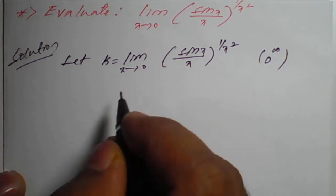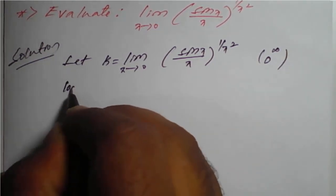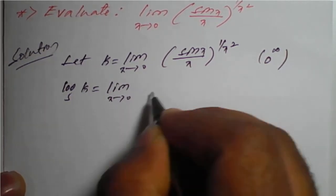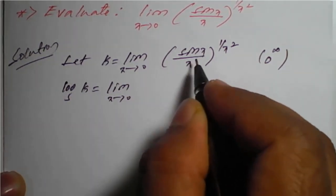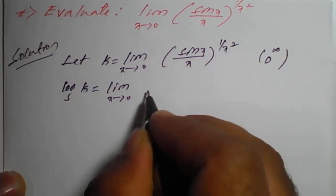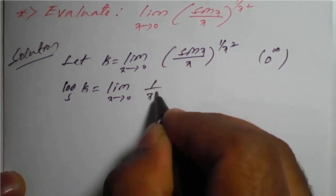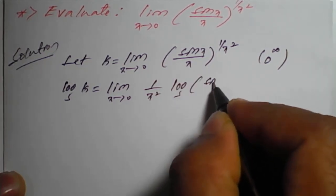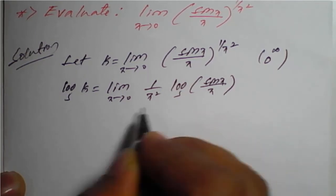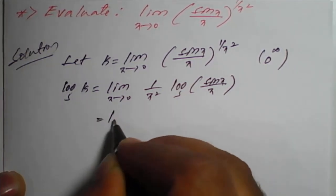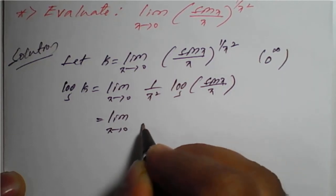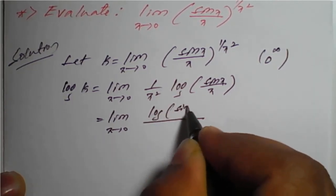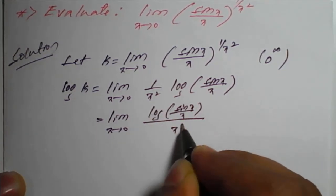In such a situation we always have to take log on both sides. So log of k is equal to limit x tends to 0. Applying log of a function raised to a function, the exponent comes out: 1 upon x square into log of (sin x divided by x). Therefore on simplification: limit x tends to 0 of log(sin x / x) divided by x square.